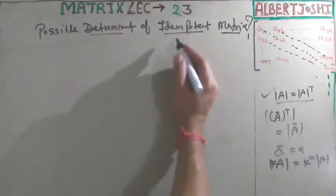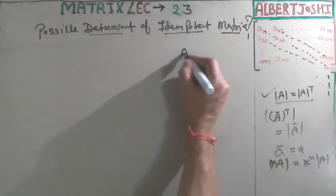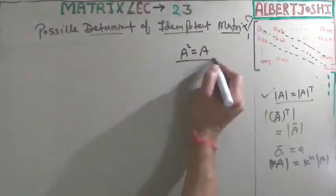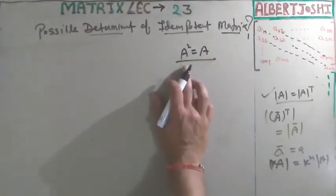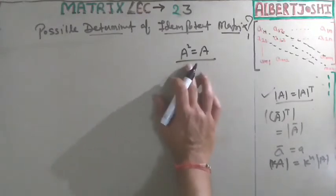So what is idempotent? Idempotent means A squared is equal to A. If you are multiplying a matrix by itself — self-multiplying — and you are getting the same matrix back, then you say that this is an idempotent matrix.